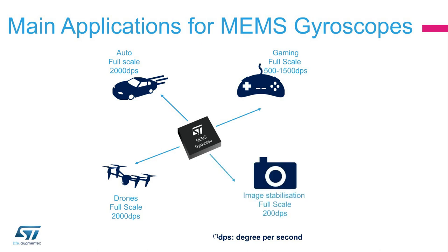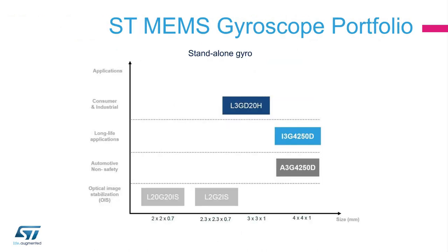At the other end of the application spectrum, image stabilization for digital still and video cameras only needs 30 DPS, and very low noise and high stability over temperature are key parameters. ST's gyroscope offering is able to cover all the main applications with the widest portfolio of single and multi-axis gyroscopes now available on the market.